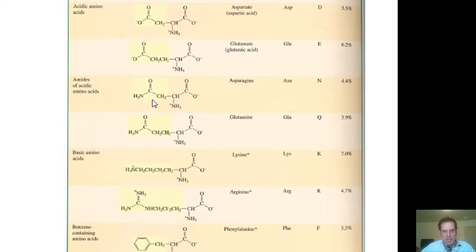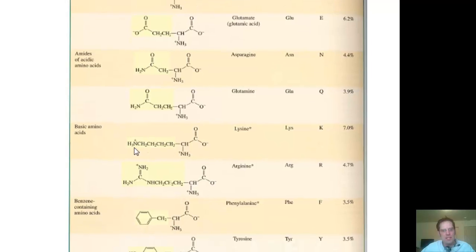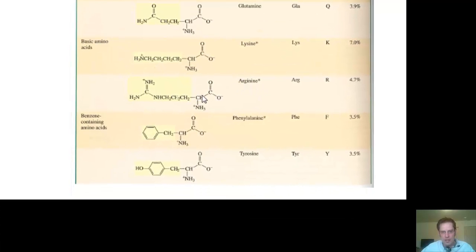Asparagine, which has this side chain. Glutamine, which has this side chain. Lysine, which has this side chain. Arginine, which has this side chain. Phenylalanine, which has this side chain. Tyrosine, which has this side chain. You'll notice that tyrosine looks exactly like phenylalanine, except that it has a hydroxyl group in the para position of benzene ring to the amino acid.